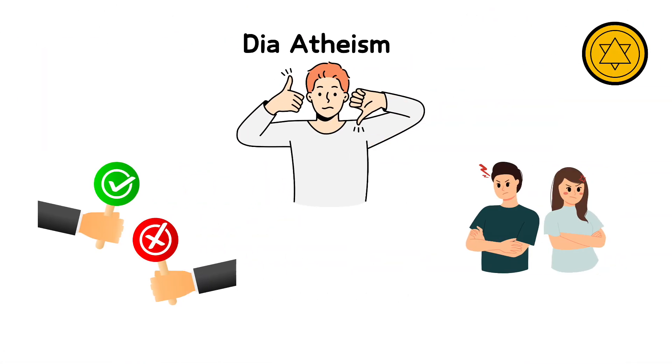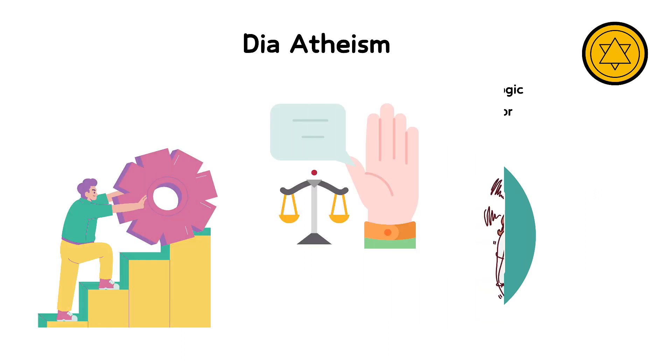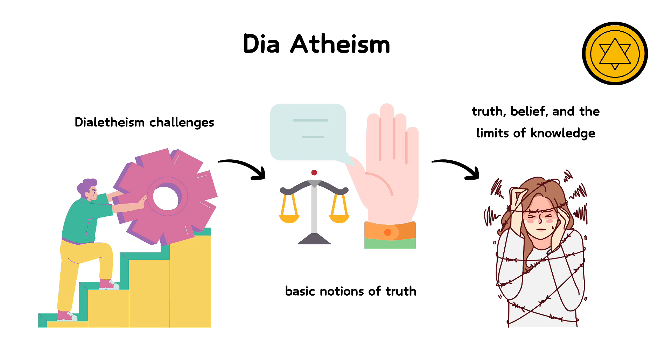Dialetheism is an approach to logic that accepts that some statements can be both true and false simultaneously. This is useful in dealing with paradoxes like the liar paradox, where a statement refers to itself in a way that creates a contradiction. This statement is false. By allowing for true contradictions, dialetheism provides a framework for understanding and discussing scenarios that traditional logic would find inexpressible or unsolvable. Dialetheism challenges our basic notions of truth and is influential in philosophical debates about truth, belief, and the limits of knowledge.